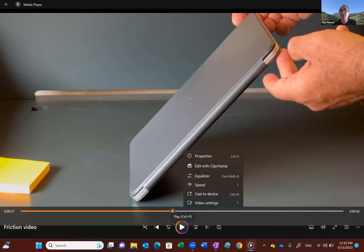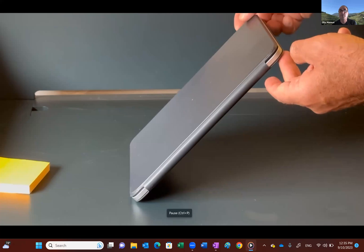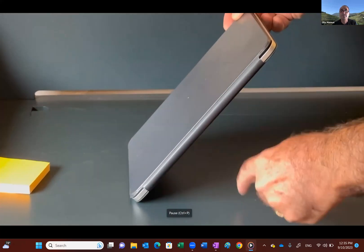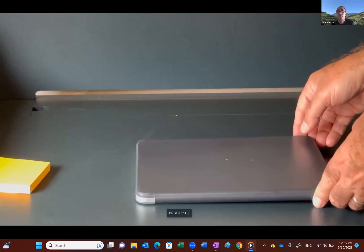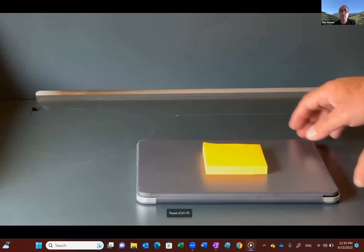Let me continue. So if you measure this angle, this angle that is formed, I will show you in a minute that the tangent of this angle is the coefficient of static friction. So it's very simple.